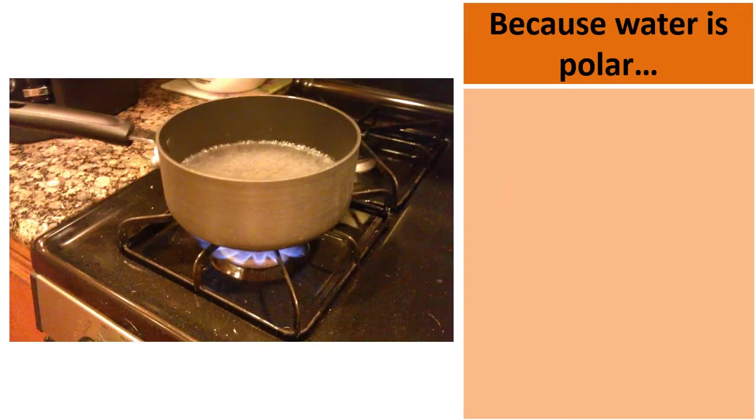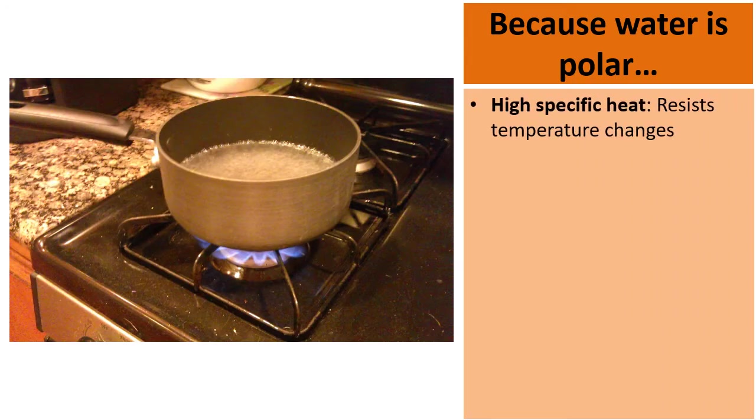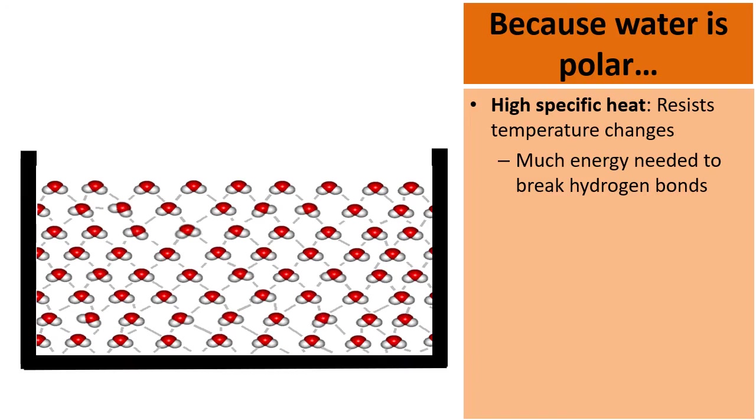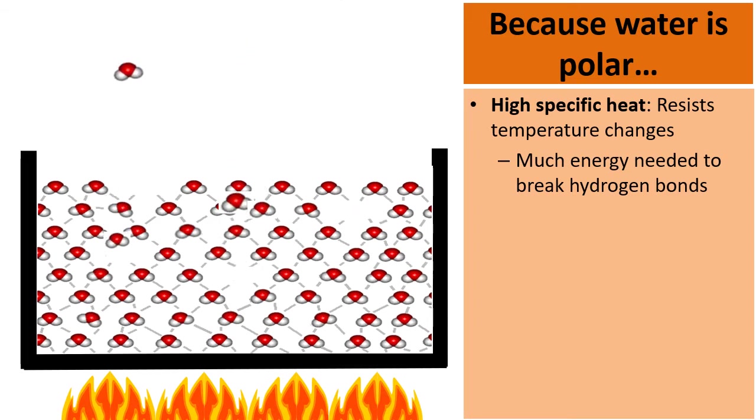So because water is polar, there's a few other characteristics. One being that water has a high specific heat. And what this means is that it will resist changing temperatures. It's not impossible to change the temperature of water. You can boil it of course. It just takes a lot of energy to break the hydrogen bonds. So here's a pot filled with water. And if we add a flame underneath, over time what happens is these hydrogen bonds begin to be broken. And the water begins to evaporate. But because water has a high specific heat, it just takes a lot of energy to break these bonds. Eventually they're broken and the water evaporates.